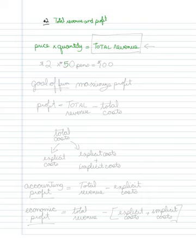If I sell 50 boxes of pens at $2 a piece, then the firm will have earned $100 total. Now the goal of the firm is to maximize profit.